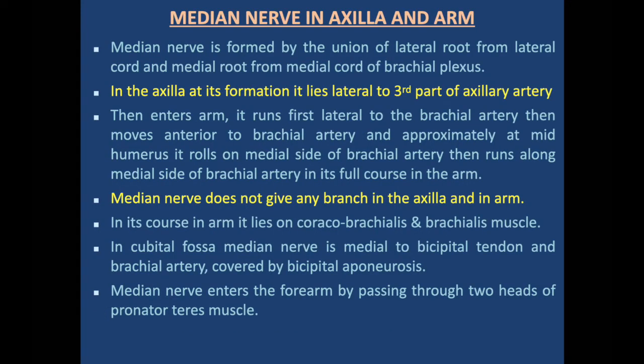In the axilla, at its formation, the median nerve lies lateral to the third part of the axillary artery. It enters the arm and runs first lateral to the brachial artery, then moves anterior to the brachial artery, and at approximately mid-humerus it rolls to the medial side of the brachial artery, then runs along the medial side throughout its course in the arm up to the cubital fossa. The median nerve does not give any branch in the axilla and in the arm.